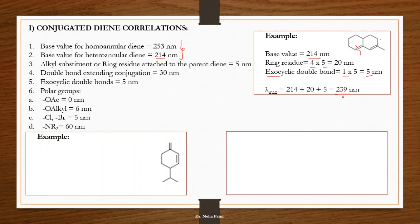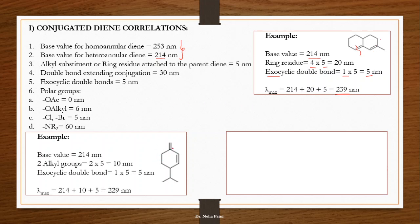Moving to the next example: the base value is again 214 nm because it is a heteroannular diene. There are two alkyl substituents on the diene — you can locate them as substituent one and substituent two — contributing 2 × 5 nm. There is one exocyclic double bond, and adding everything gives the total lambda max for this structure.